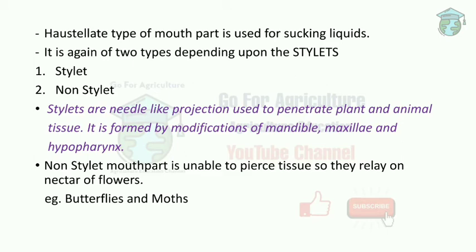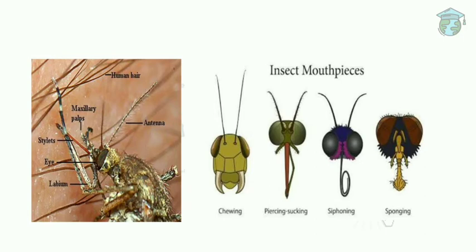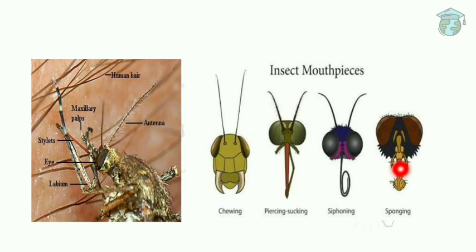In the images of different types of mouth parts: the first image shows the stylet part of a mosquito — the pin-like projection that helps pierce animal or plant tissue. The second figure shows the biting and chewing type head, followed by piercing and sucking, siphoning, and sponging types, which are all haustellate mouth parts.